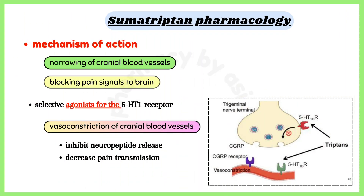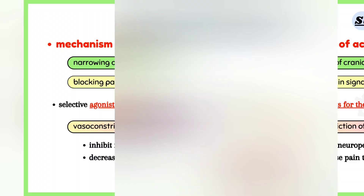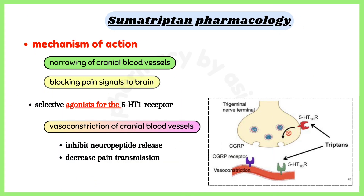Sumatriptan works by narrowing cranial blood vessels and blocking pain signals from being sent to the brain. Triptans are selective agonists for the 5-HT1 receptor and cause vasoconstriction of cranial blood vessels, thereby inhibiting neuropeptide release and decreasing pain transmission.